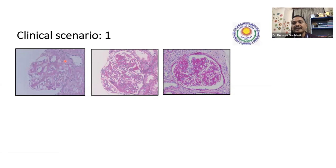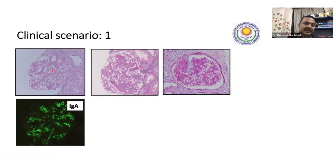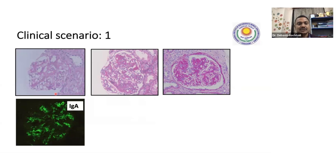Now, all these are three different cases. Before going to immunofluorescence, we see the clinical picture, the serological profile, light microscopy, and finally immunofluorescence, and then we form an opinion. If I have this kind of positivity in the mesangium — I'm showing you IgA, immunoglobulin A — correlating with mesangial expansion, we can say this kidney biopsy is positive for IgA and it is more likely to be IgA nephropathy.